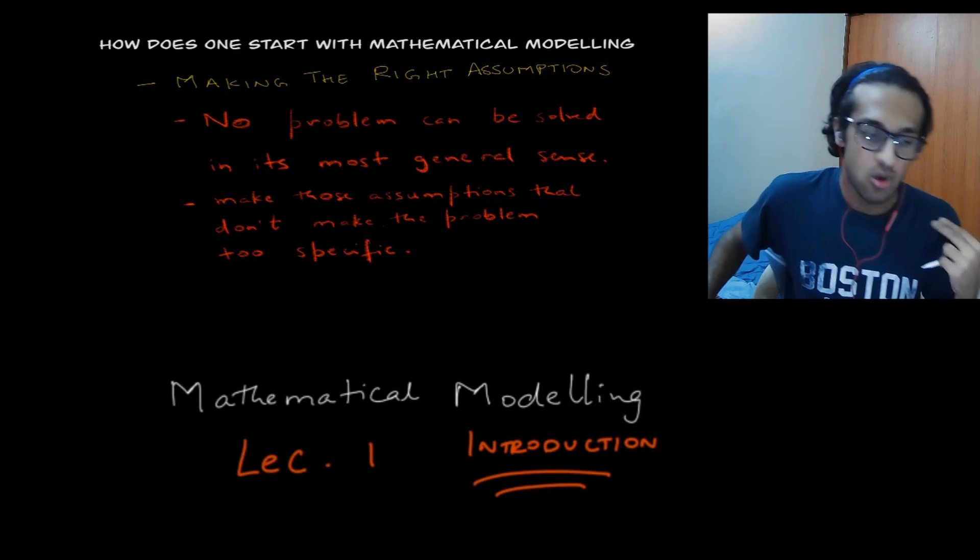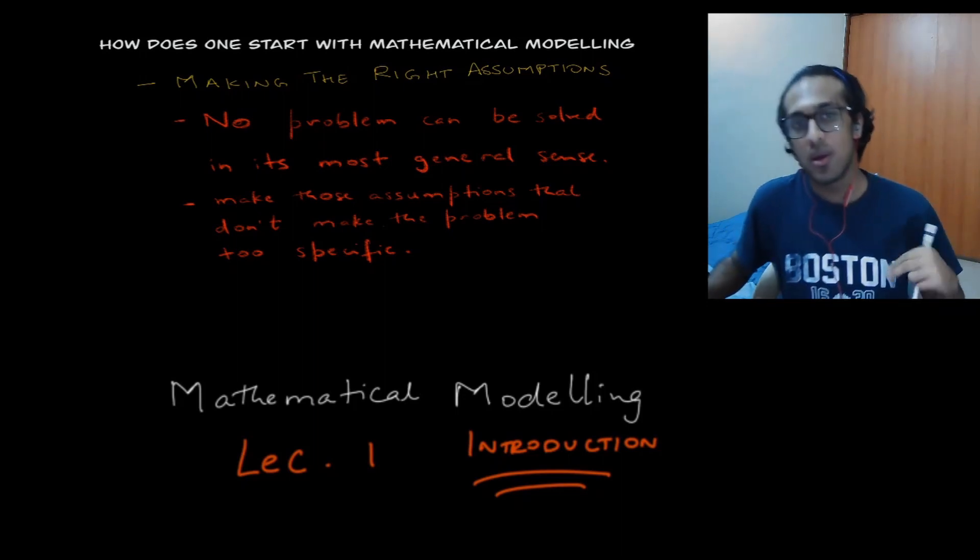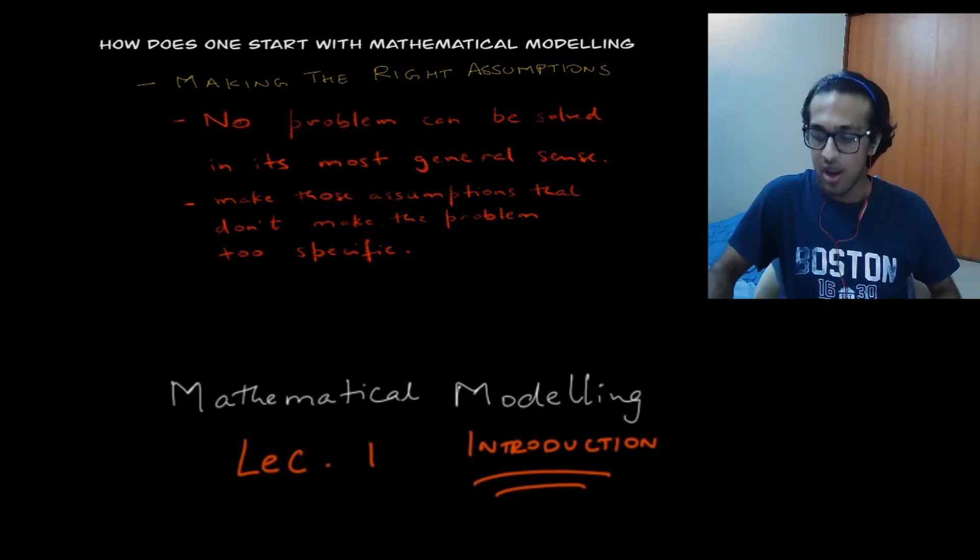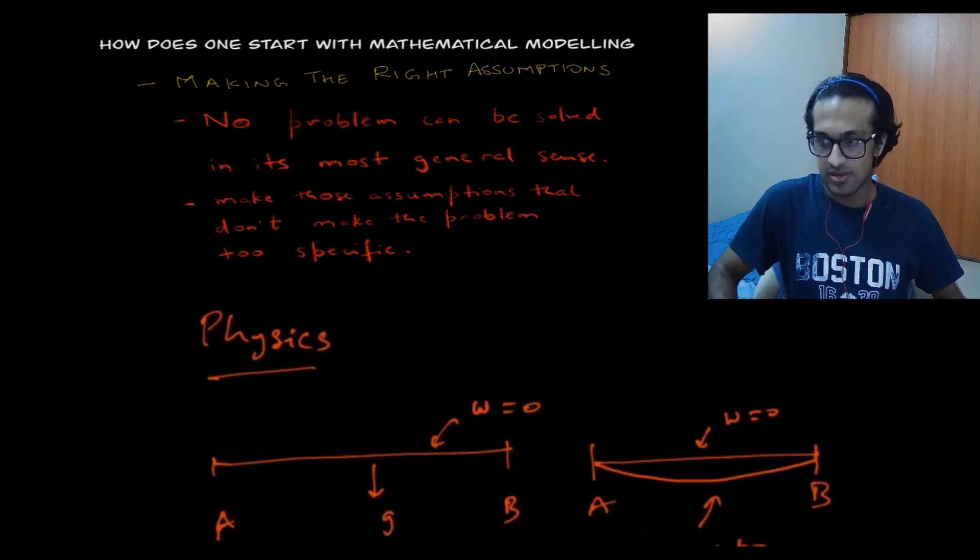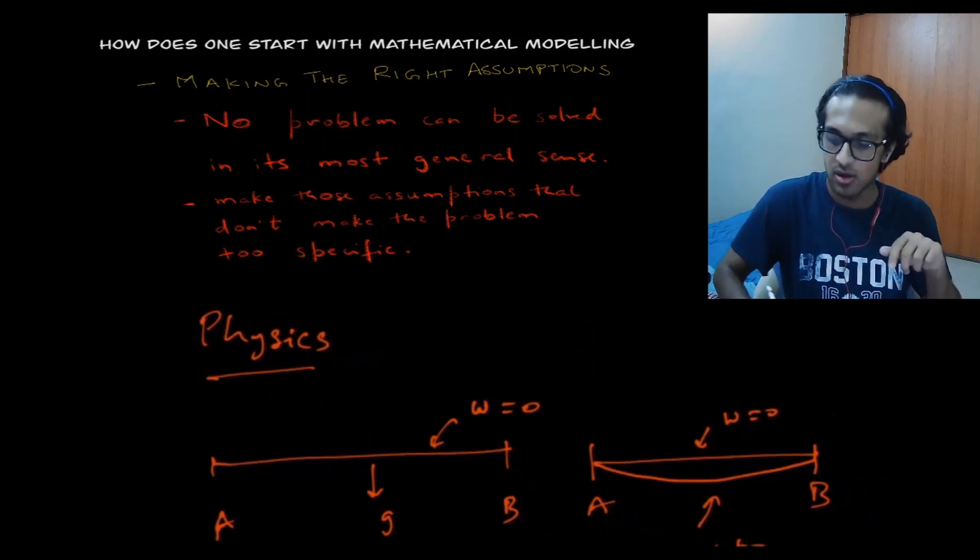The second key factor that I always talk about when I do mathematical modeling is to make the right assumptions. And now to give you a good example of it, I'm going to show you something from our high school days.